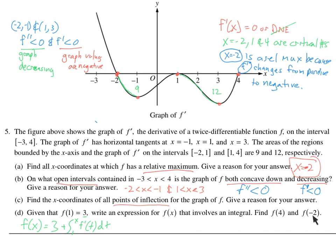For F of 4: plug 4 in for x. F of 4 equals 3 plus the integral from 1 to 4 of f prime of t, dt. What is that integral equal to? It's the area from 1 to 4 — but it's negative, since the curve is under the x-axis. So F of 4 equals 3 plus negative 12, which is negative 9. That makes sense: starting at 3 and dropping by a change of negative 12 gives negative 9.